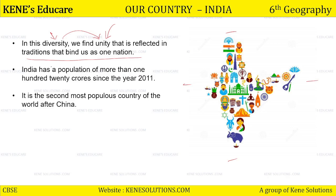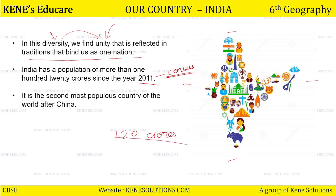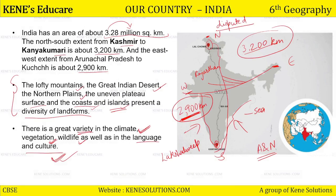India has a population of more than 120 crores since the year 2011. 2011 mein census hua tha, tab hamaari population 120 crores thi. It is the second most populous country of the world after China. China number one most populous hai — sabse zyada population China mein hai — aur second position pe aata hai India.